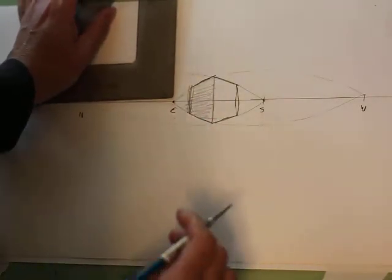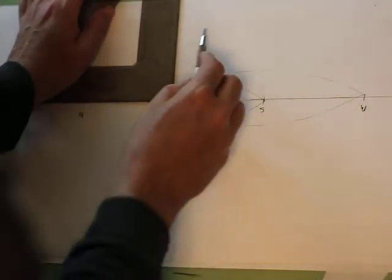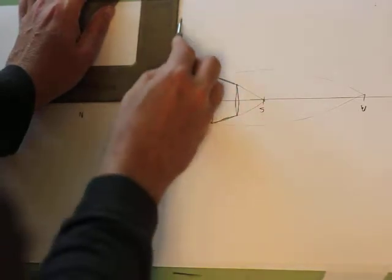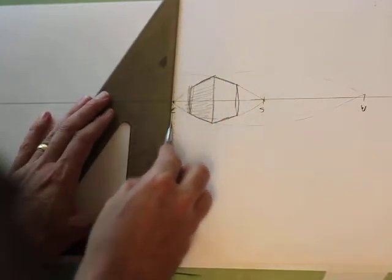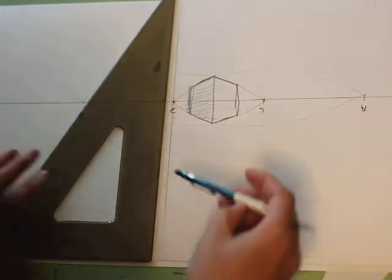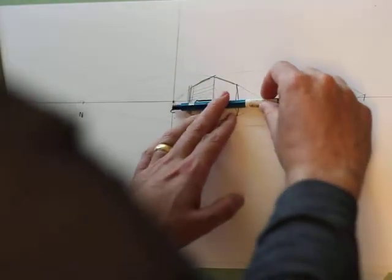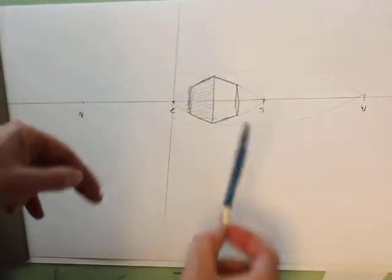So instead, we use arcs. We use sections of a circle. And I'm seeing here that my distances weren't exact. It's pretty close.